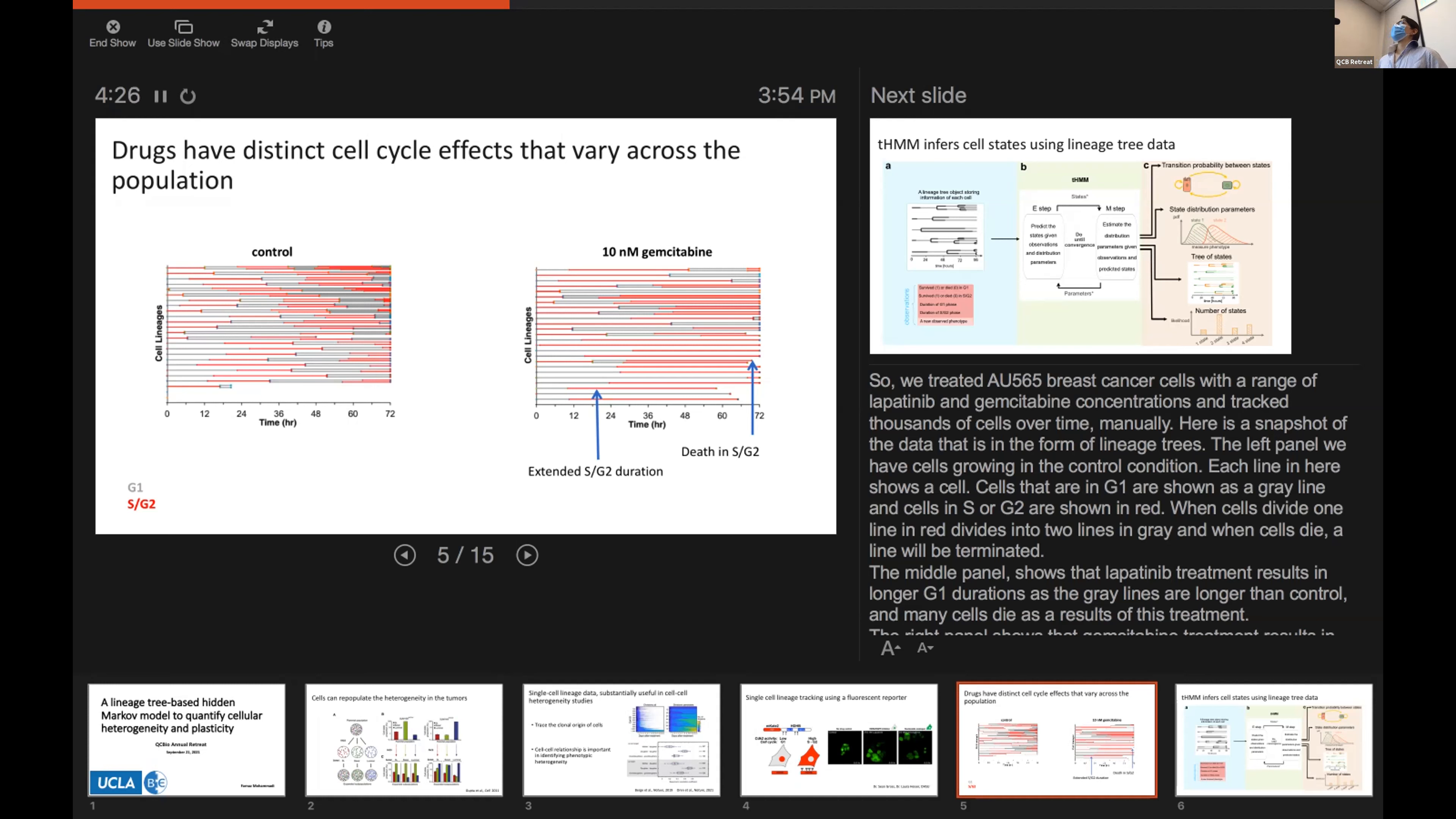On the right, we have cells that are treated with 10 nanomolar of gemcitabine, and clearly, we see a lot of long red lines, which means that gemcitabine is arresting cells in S/M/G2 phase and sometimes inducing a cell death in S/R/G2.